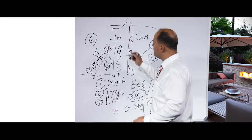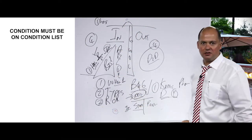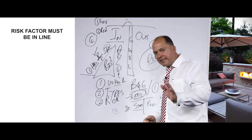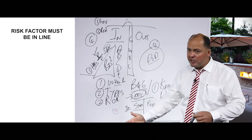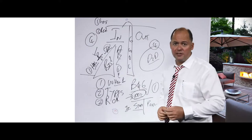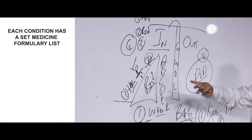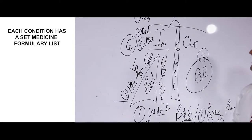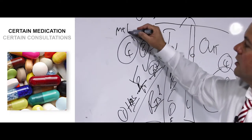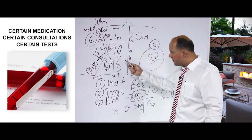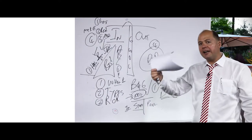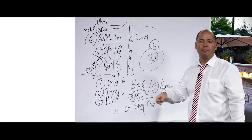The first thing about the chronic benefit: your condition must be on the condition list. Number two, your risk factor must be in line — they have certain criteria to measure this. For example, with asthma: one pump per year means very low risk; one per month means real risk. Number three, each condition has a set list called a medicine formulary list. If your condition is on the list, your medication plus certain consultations and tests will be covered from the chronic medication benefits as part of the risk portion benefit. The main thing is you must fill in a chronic medication application form — it won't happen automatically.